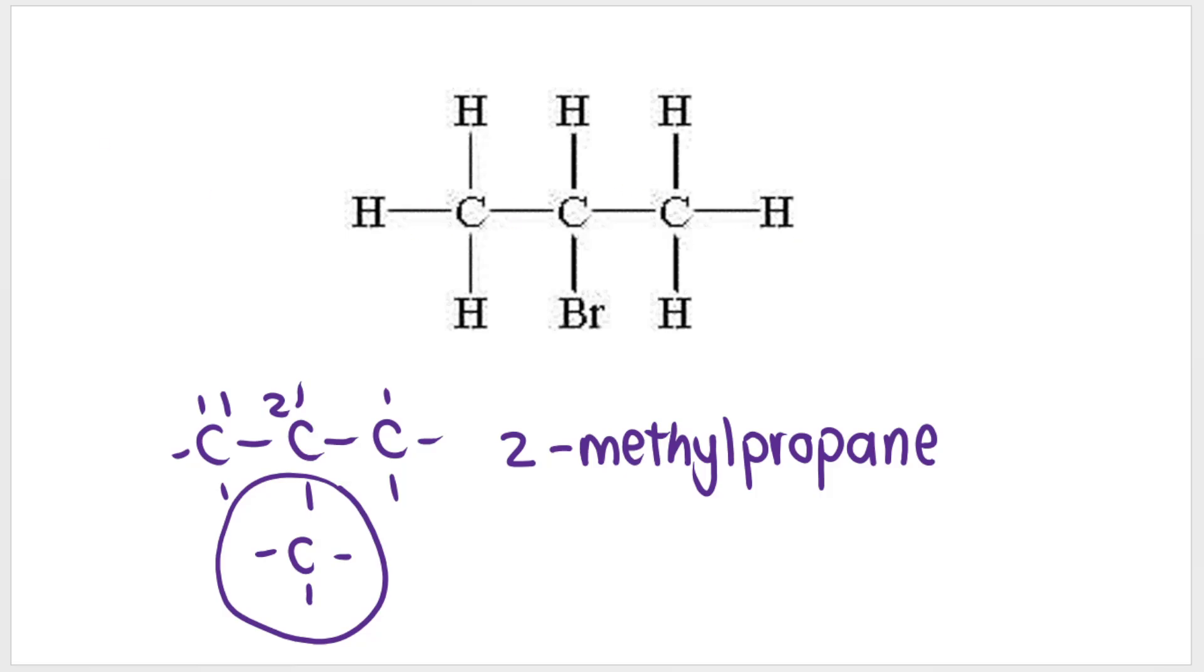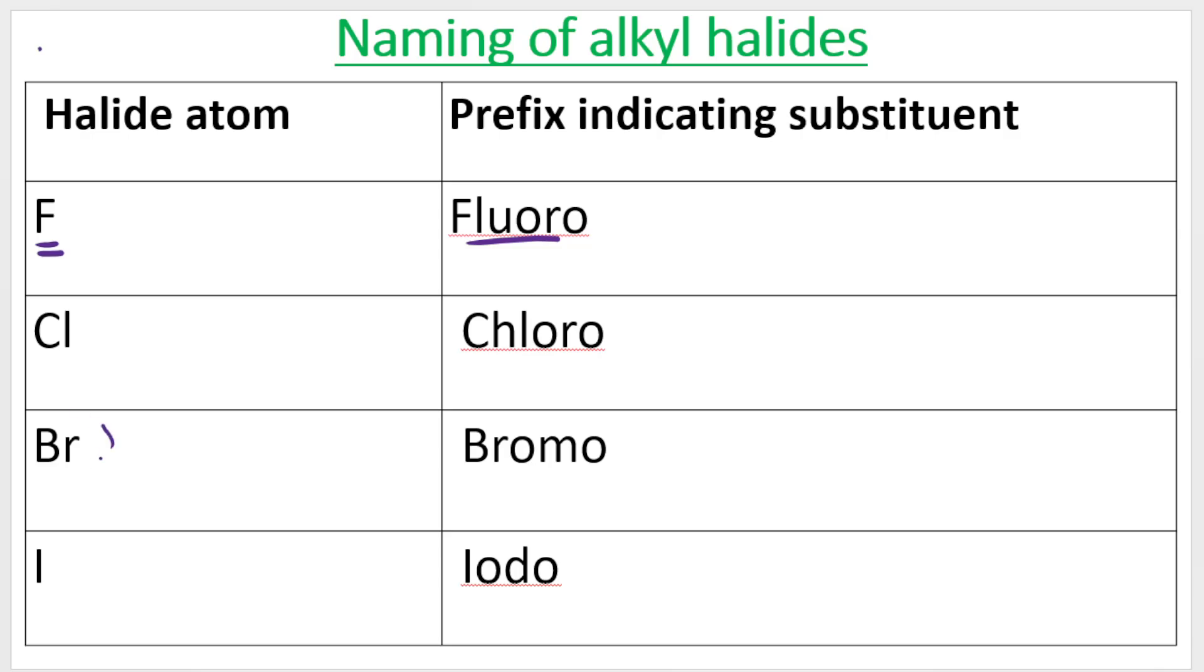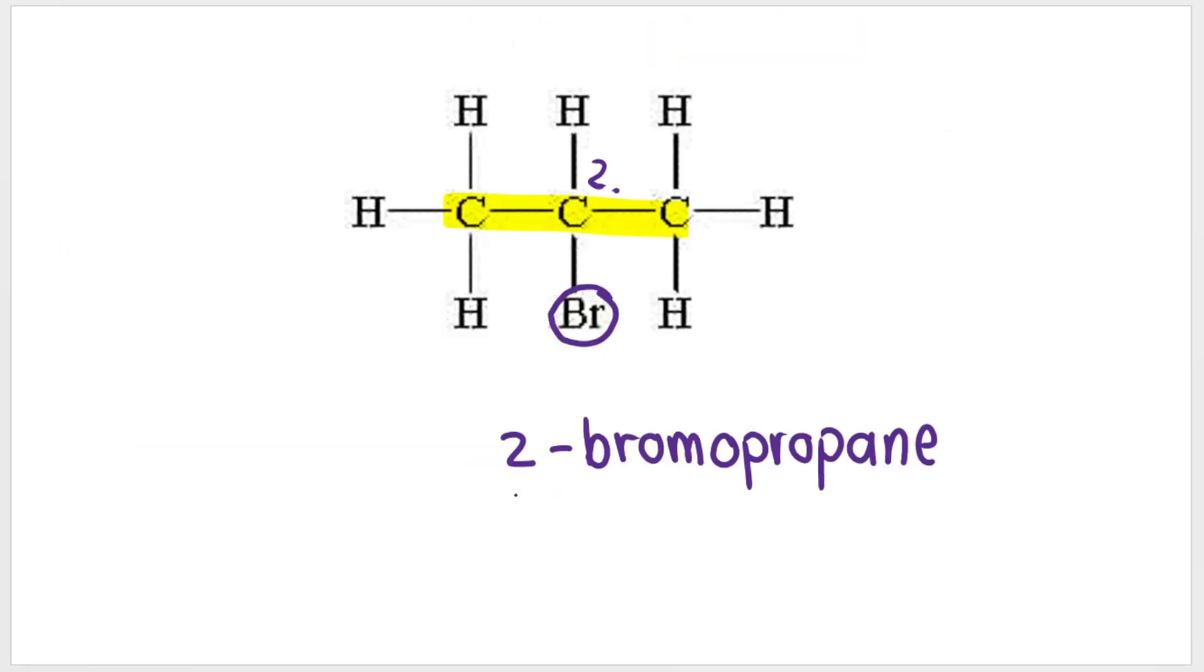It's the same, very similar for haloalkanes, except on the second carbon, I have a bromo. So this compound will be 2-bromopropane, because 3 carbons in the main chain, on the second carbon I have a bromine atom, and if you see a bromine atom, it's going to say bromo.